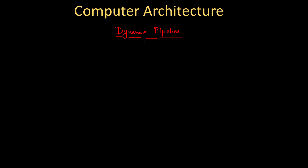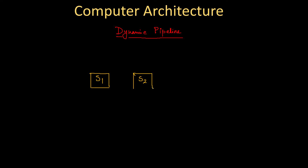We will try to understand dynamic pipeline and the other necessary things with an example. Suppose we have four stages — stage one, stage two, stage three, stage four — but the connections are definitely not unique. We have two types of instructions that execute in two different ways.